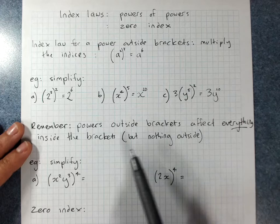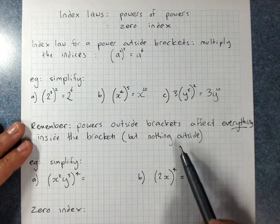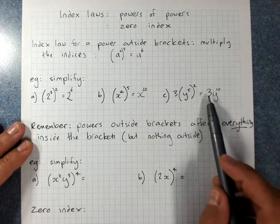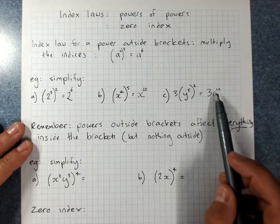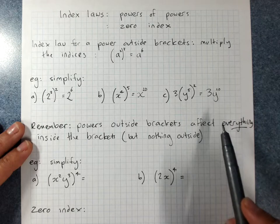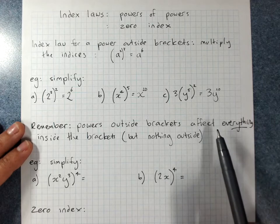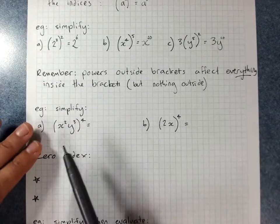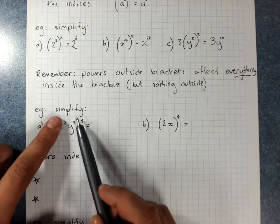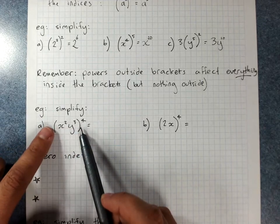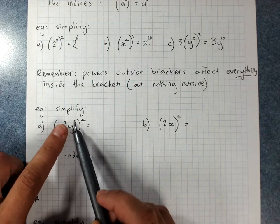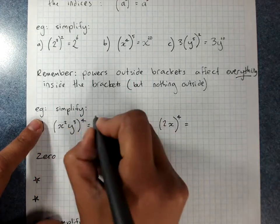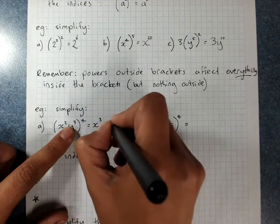And if you've got a power where there's no brackets, that power only belongs to the thing that it's with. See this here — there's a power and no brackets. That 10 only belongs to the y; it doesn't belong to the 3. So powers only belong to the thing they come right after, unless there's brackets saying they belong to everything. So in this one, the 4 outside the brackets means both powers have to be multiplied by 4: x to the power 2 times 4 is 8, y to the power 3 times 4 is 12.